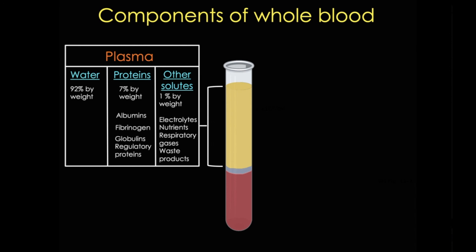Plasma proteins all buffer against pH changes, but I want to highlight a few. First, the most abundant plasma protein is albumin, and this is made in the liver, and its job is to maintain the osmotic pressure of the blood. Other critical plasma proteins, such as fibrinogen, function in coagulation of the blood, or blood clotting.